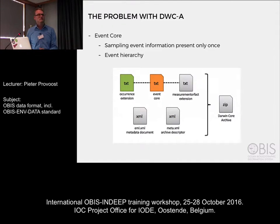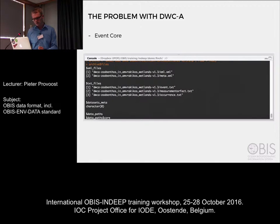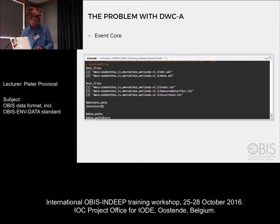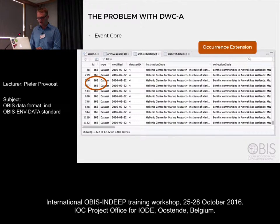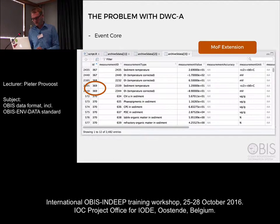This is okay if you have temperature measurements, but it's a problem if you also have body length measurements for your organisms. In a Darwin Core archive with event core, measurement or fact extension, and occurrence extension: the event core has an identifier, the occurrence extension links to the event ID, and the measurements also link to the event ID — but there's no way to make a link from your measurements to your occurrences.